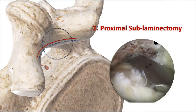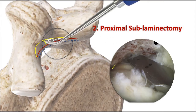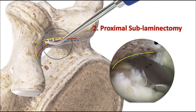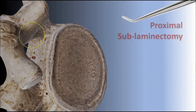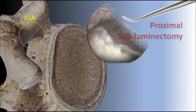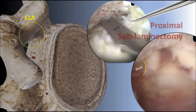When we need contralateral foraminal decompression, then one more 2 mm resection of the proximal sublaminar area can show you the exiting route. When you want to decompress the contralateral foramen, don't try to resect too much lamina. Only resection of the proximal sublaminar area can show the way to the foramen.